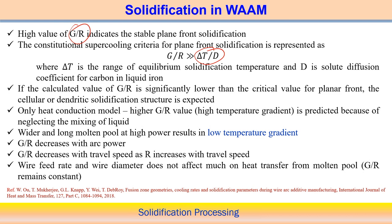Here ΔT is the equilibrium solidification temperature range, and D is the solute diffusion coefficient — specifically the diffusion coefficient of carbon within liquid iron in the case of steel. If G/R is very high, constitutional supercooling is suppressed. A critical value of G/R can be estimated as equal to ΔT/D. A low value of G/R leads to cellular structure, then columnar-dendritic, and finally equiaxed structure.